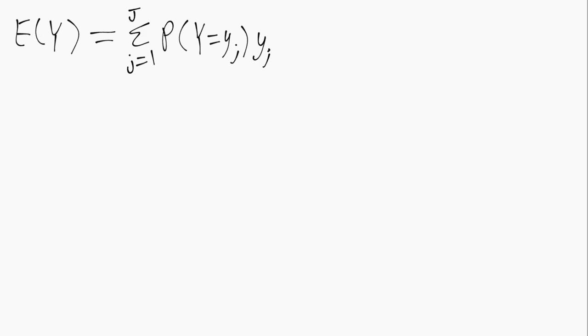This video goes through a few examples from the textbook involving the mean of a discrete random variable. The formula from the book is written at the top, where uppercase Y is the random variable and E stands for the expectation operator or the mean of random variable Y.